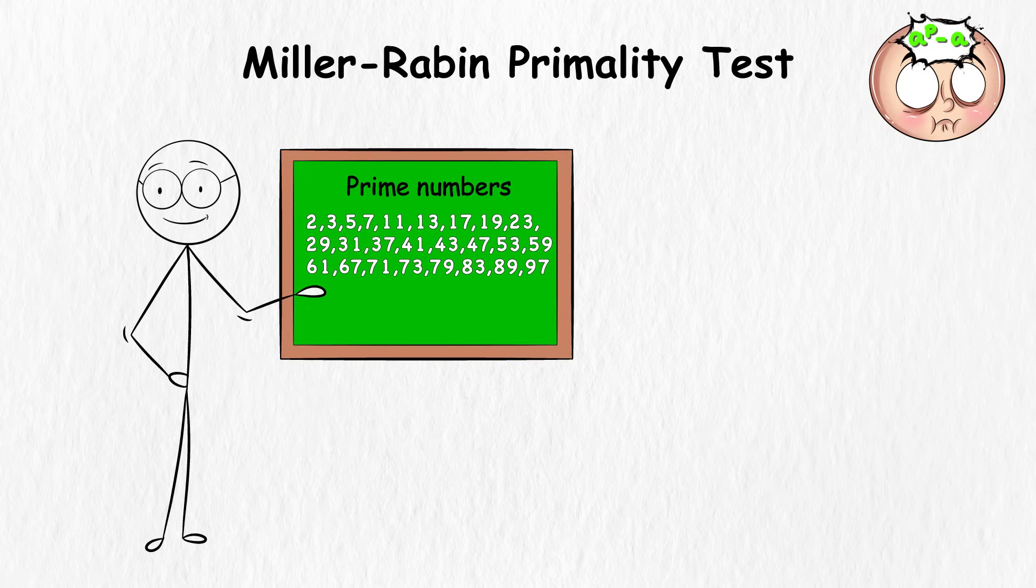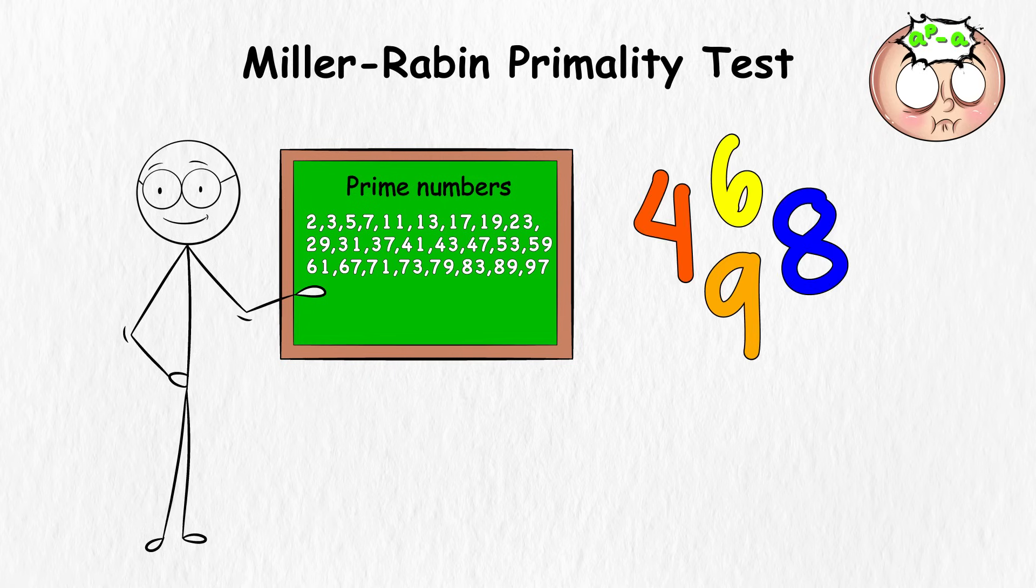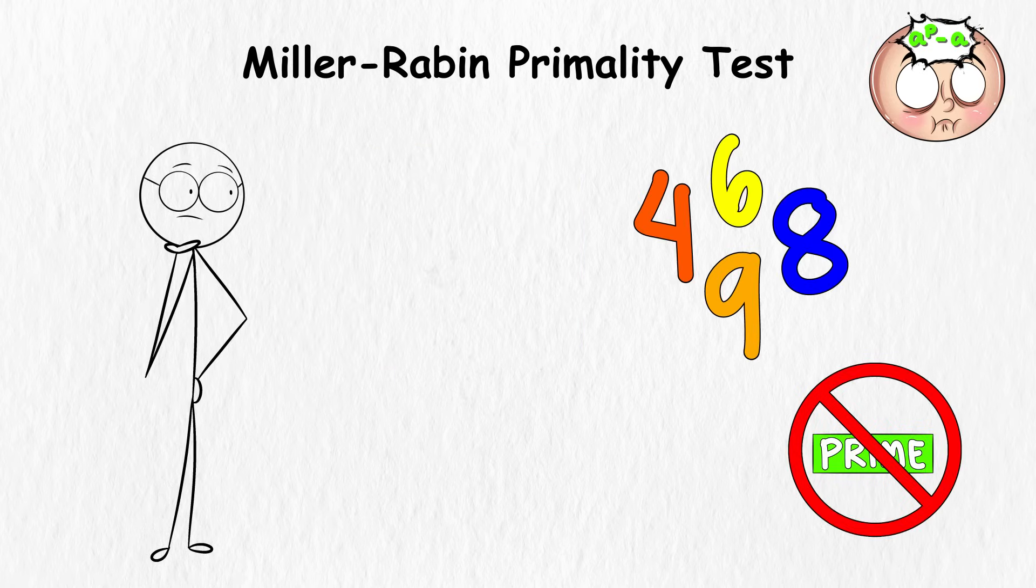You use it by picking a random number and do some math with it to see if it matches certain patterns that only prime numbers follow. If the patterns fit, the number might be a prime number, but it could also be a composite number, which means it's not prime. So the test only gives you a guess, and sometimes it's wrong.